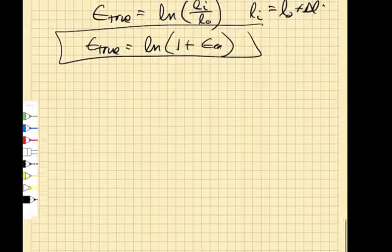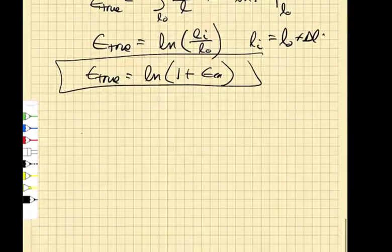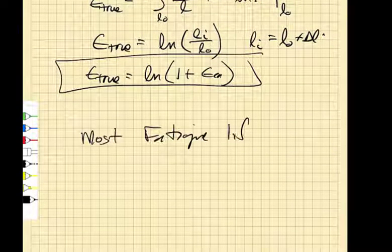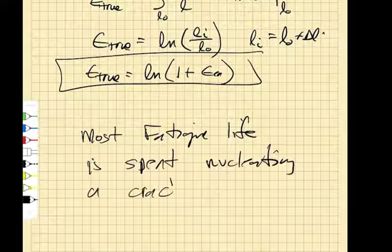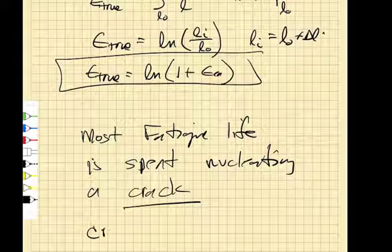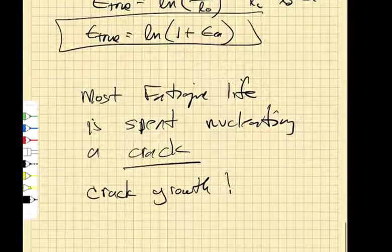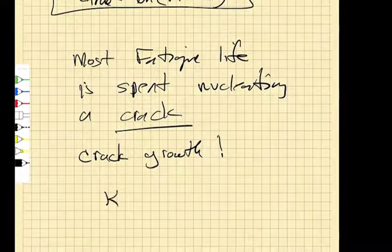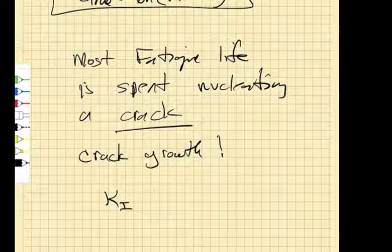The other thing that's important is most of the fatigue life is spent in nucleating. Once the crack forms, then we treat it as a crack growth problem. So when we have a crack growth problem, then we want to look at the stress intensity factor. If we're loading in mode 1, then K we know is some geometric correction factor times sigma root pi A.